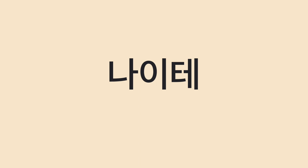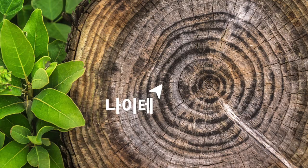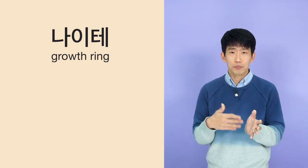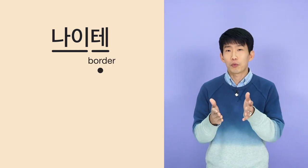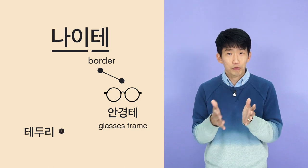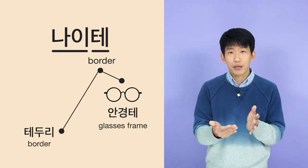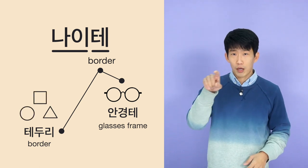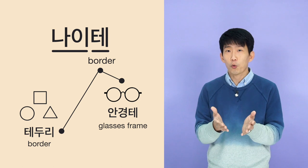Here's another example: 나이테, which refers to growth rings in a tree that show how old it is. The word is made up of 나이 and 테 — and 테 means a border. It's also used in 안경테 (the frame of glasses) and 테두리, which means the border or boundary of a shape. For example, when you draw a shape on a computer, its border is called 테두리 in Korean.